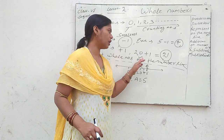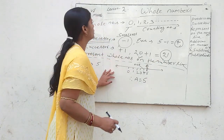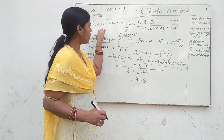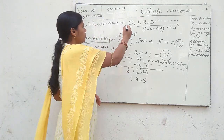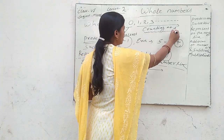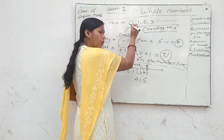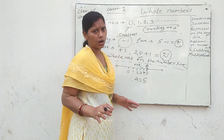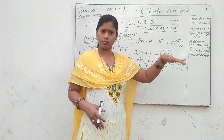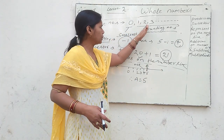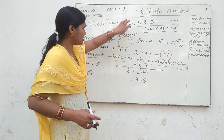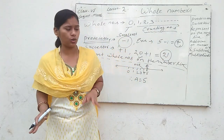Now, can whole numbers be natural numbers? Whole numbers combine 0 with natural numbers, so except for 0, all whole numbers are natural numbers. Reversing the statement: all counting numbers (natural numbers, 1, 2, 3 to infinity) are also whole numbers. So except 0, all whole numbers are counting numbers.